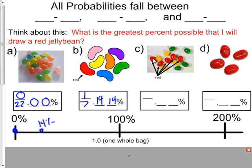Here we have 1, 2, 3, 4, 5 that are red. Out of 5, 6, 7, 8, 9, 10, 11, 12, 13 jelly beans. 5 divided by 13 rounds to 38 hundredths, 0.38. Multiply that by 100, that is 38 percent.